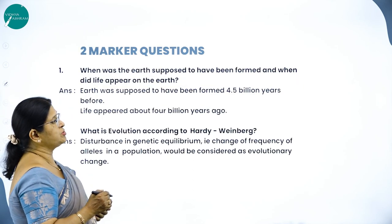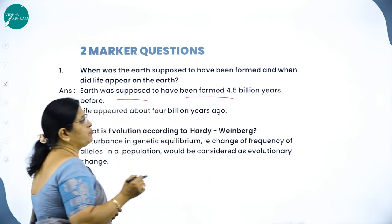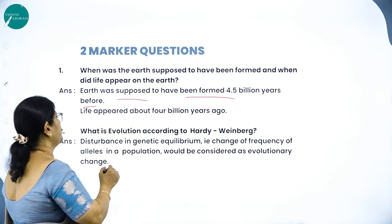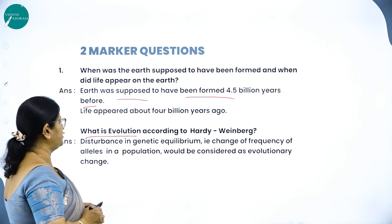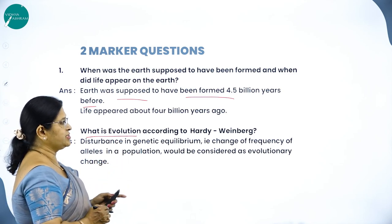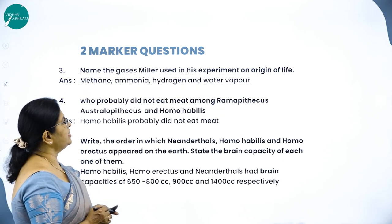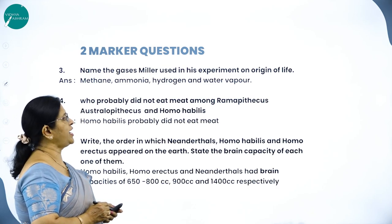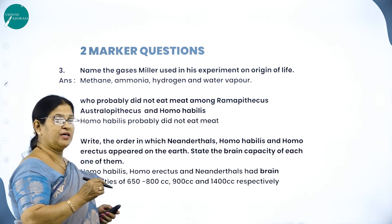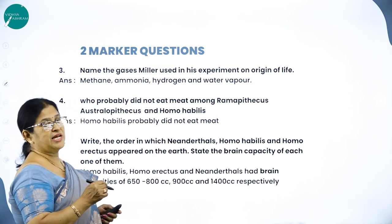When was the earth supposed to have been formed and when did life appear? Earth was formed 4.5 billion years ago, and life appeared about 4 billion years ago. According to Hardy-Weinberg, a disturbance in genetic equilibrium — that is, a change in frequency of alleles in a population — would be considered an evolutionary change. Miller used methane, ammonia, hydrogen, and water vapor in his experiment, the same gases prevailing in the prebiotic atmosphere.